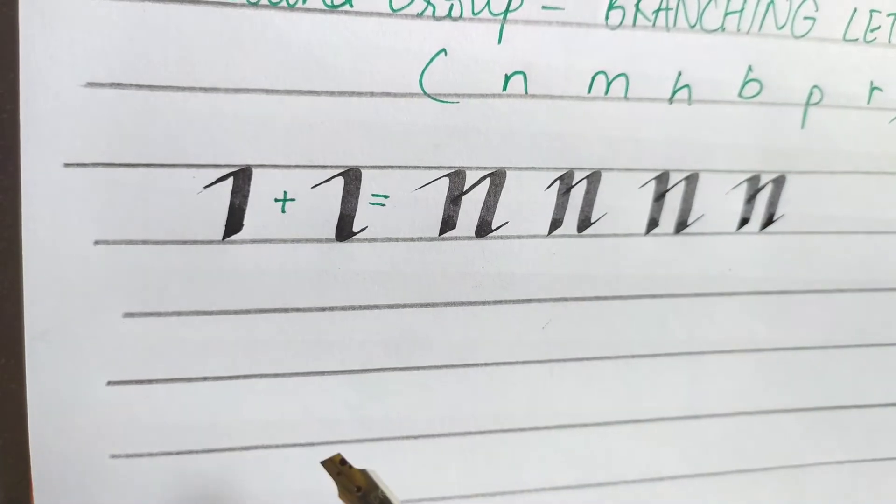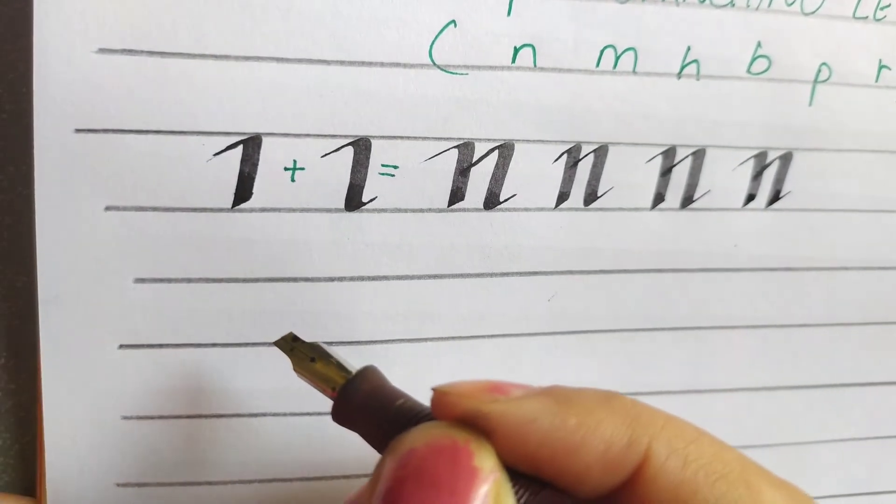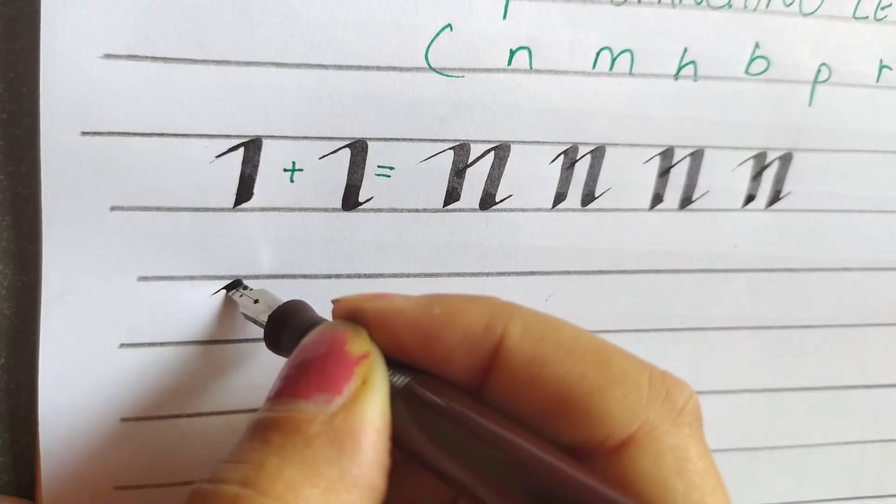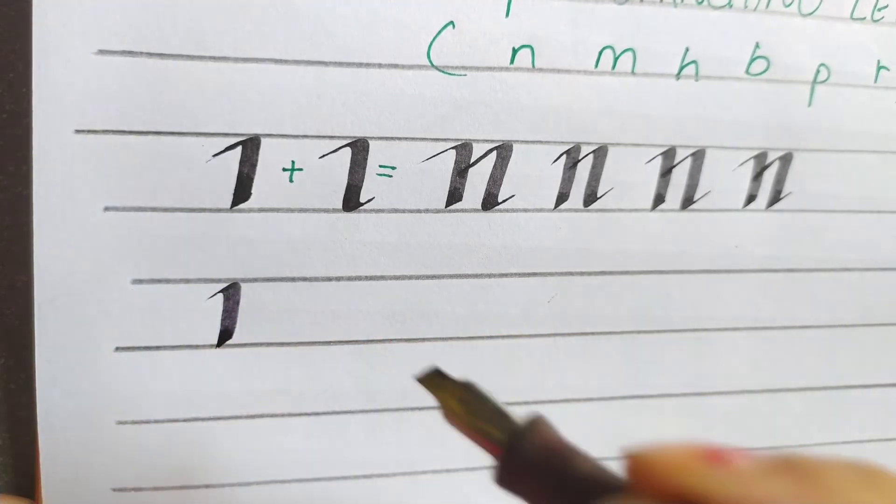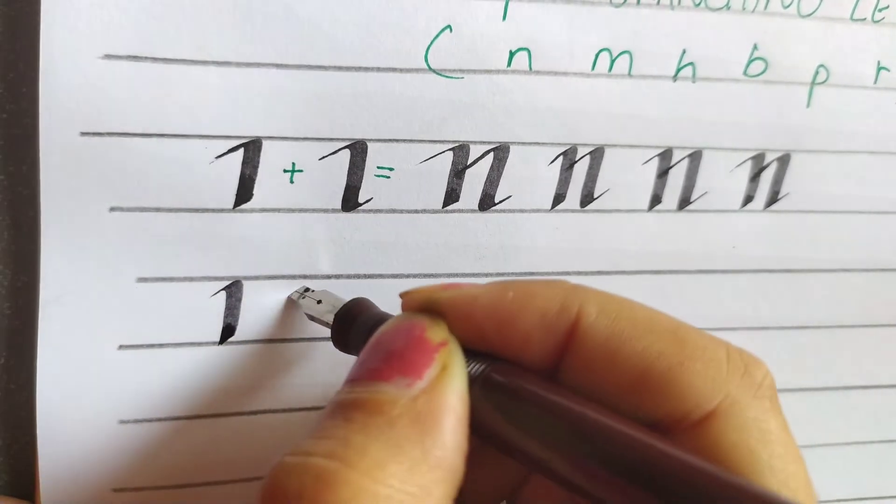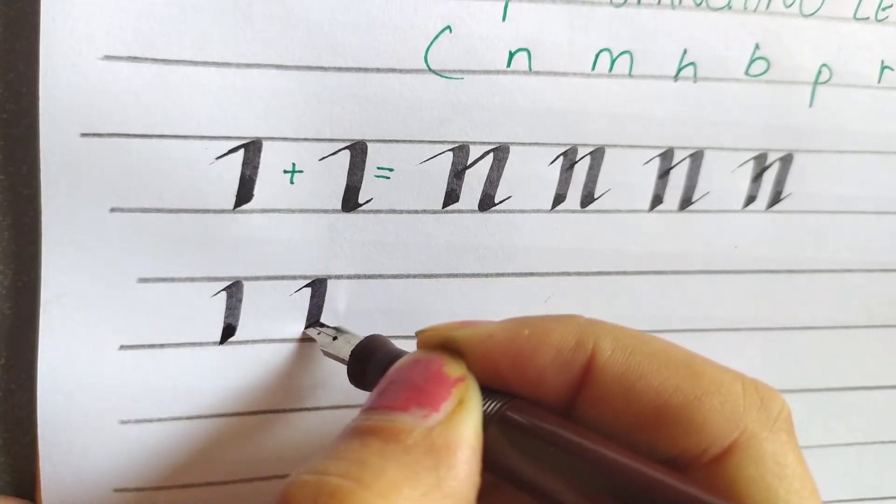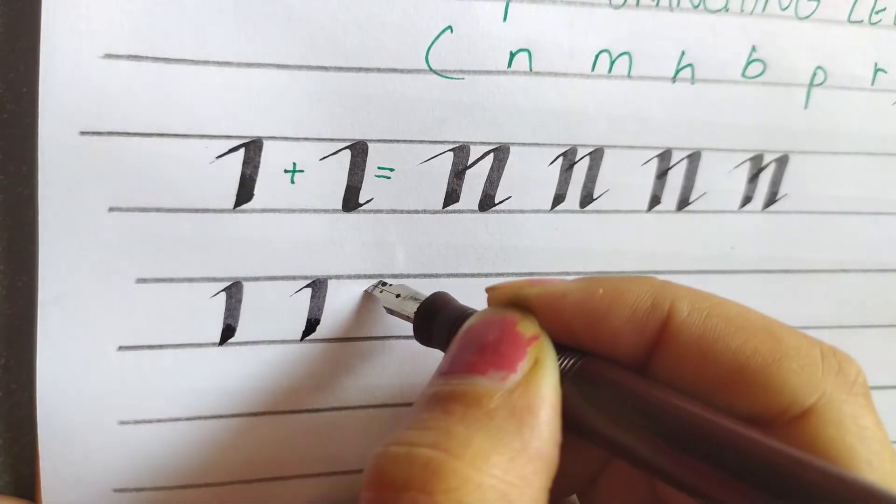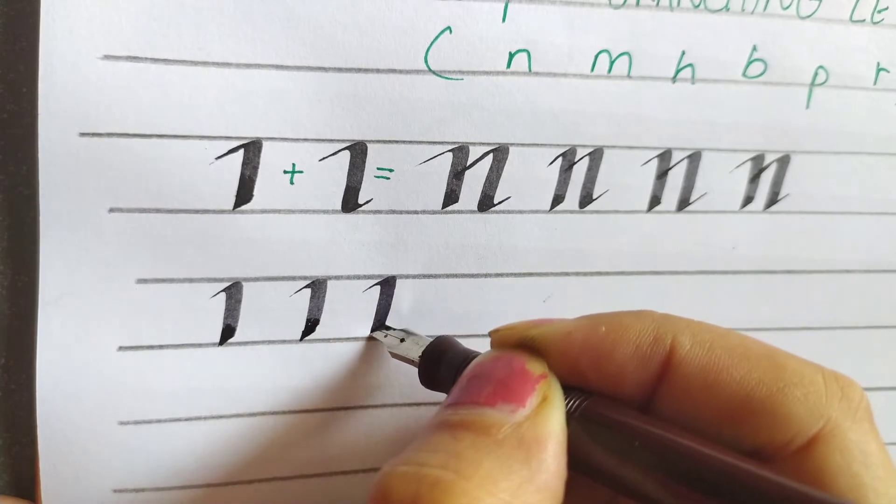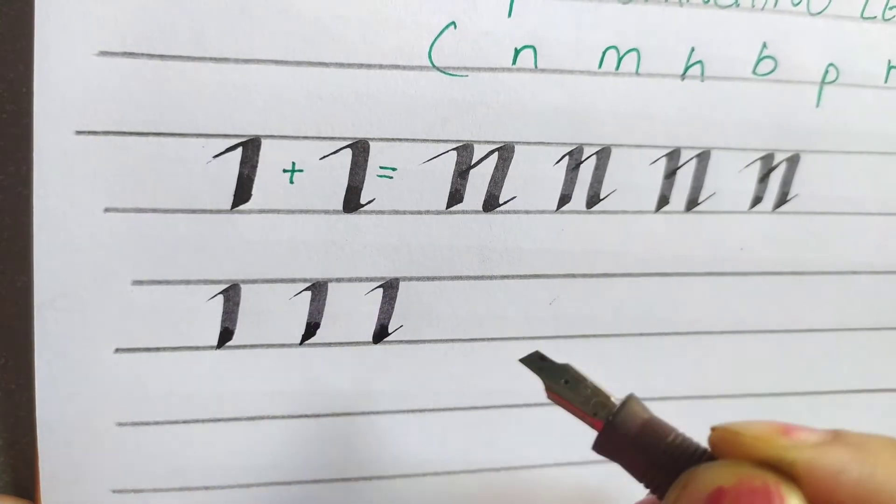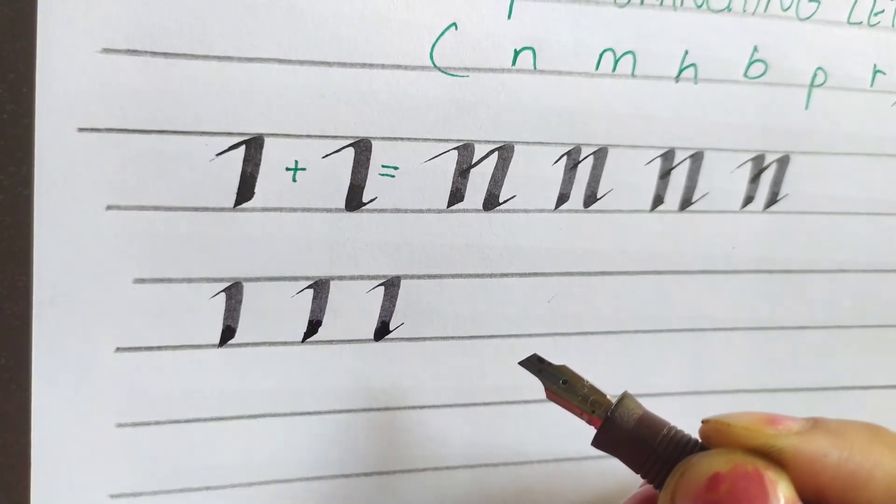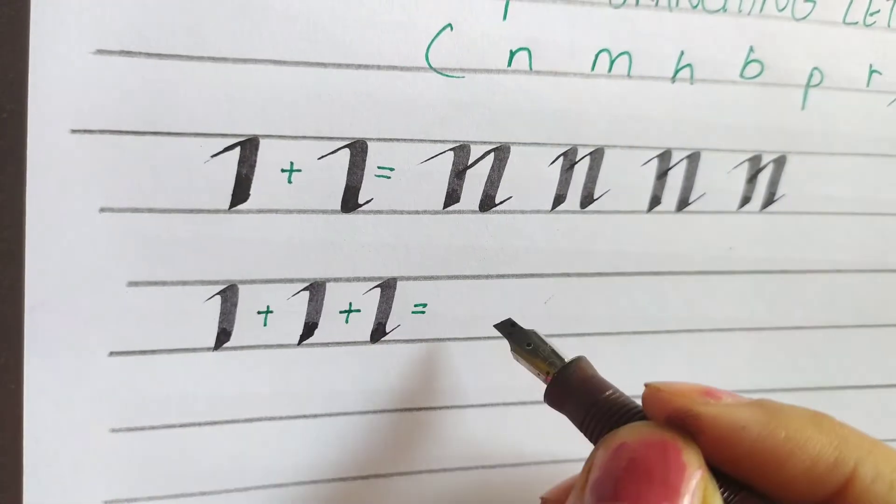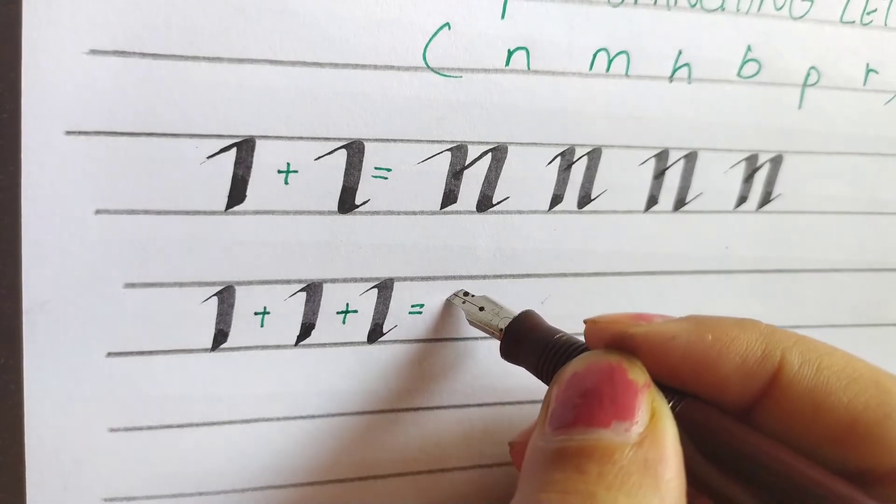Now we will write alphabet M. Alphabet M is almost same like N. First is this, then we will add this stroke and finally this one. Do not put the filial in second one, we will put the foot filial in the third one.